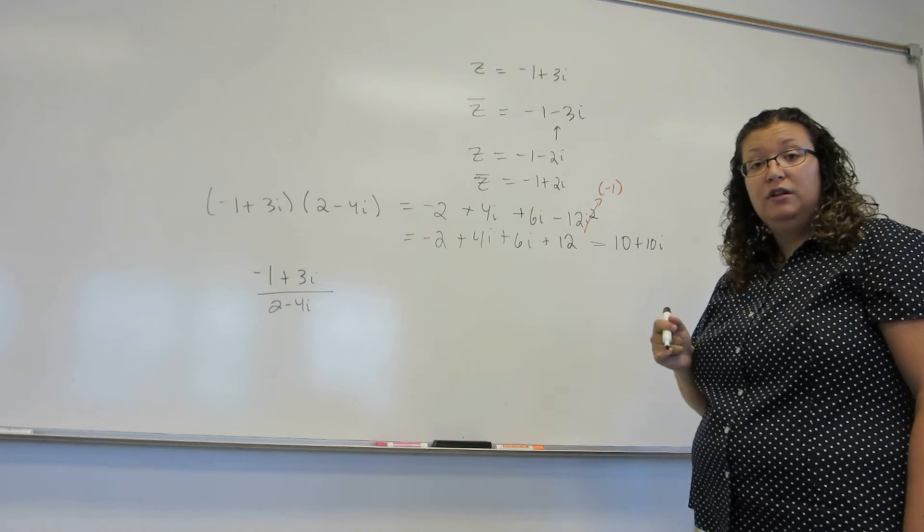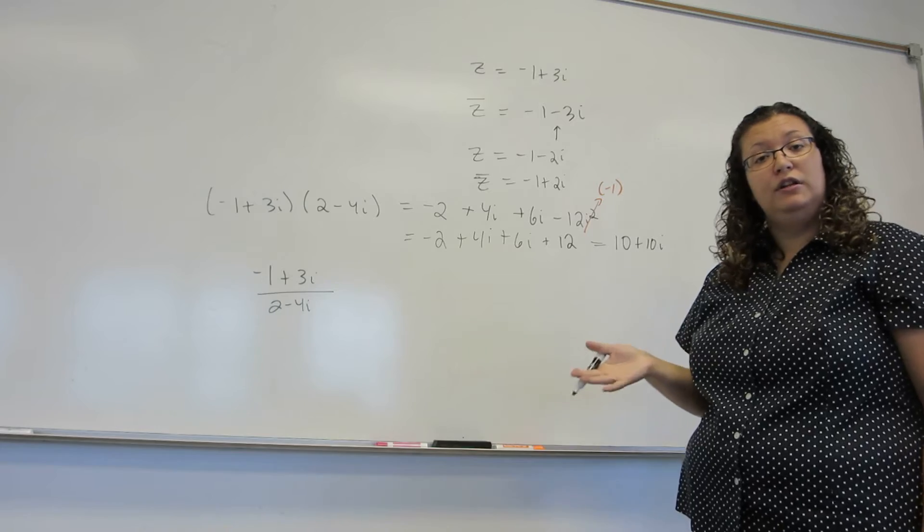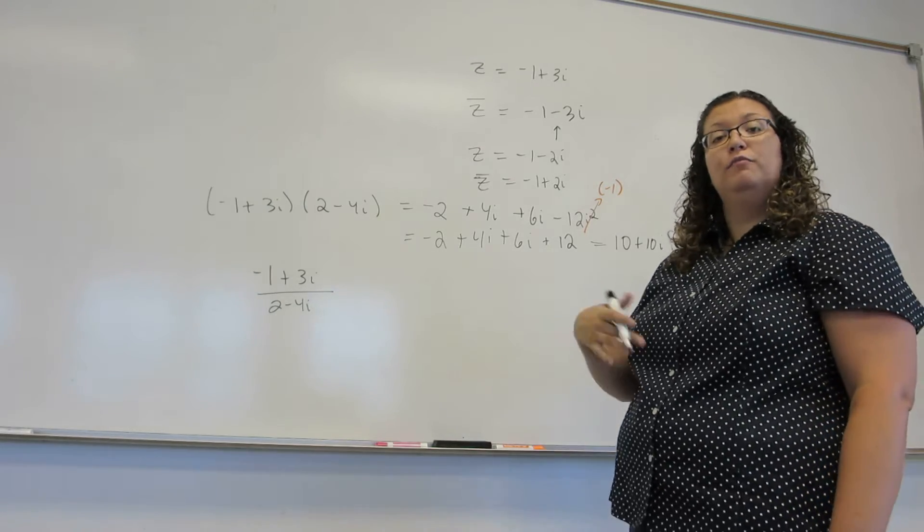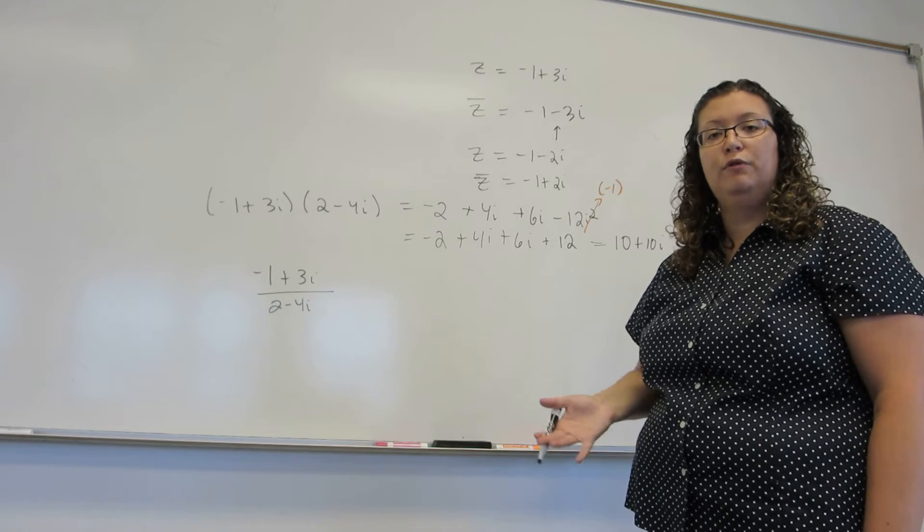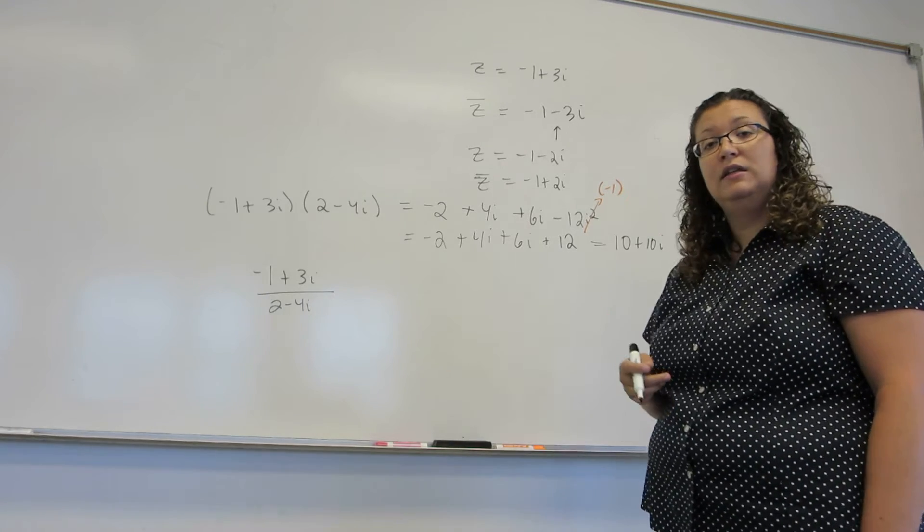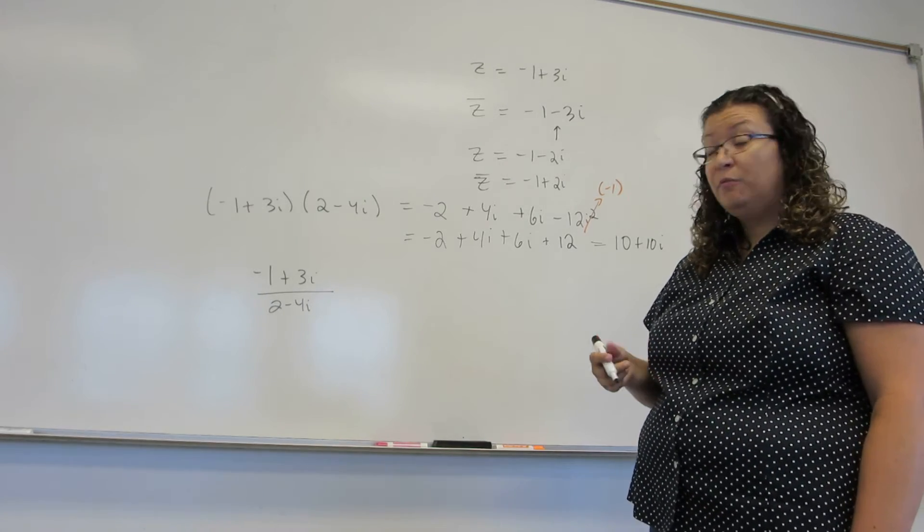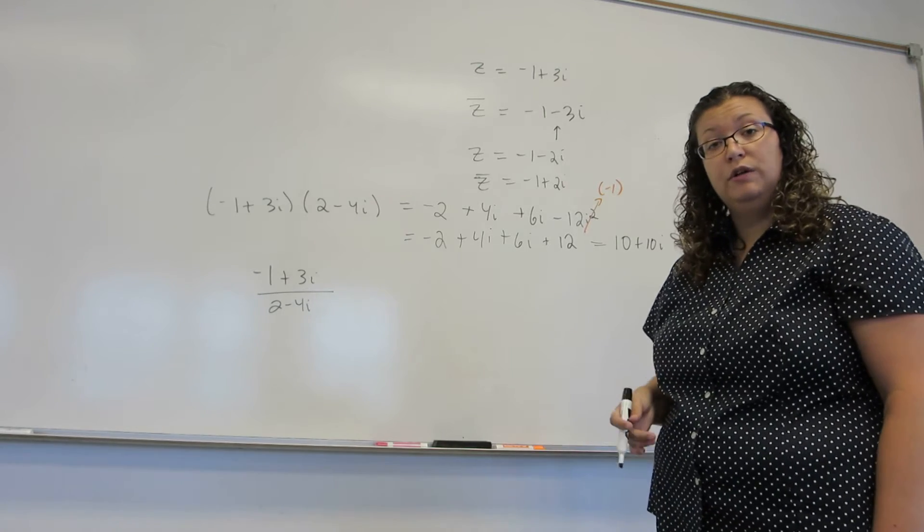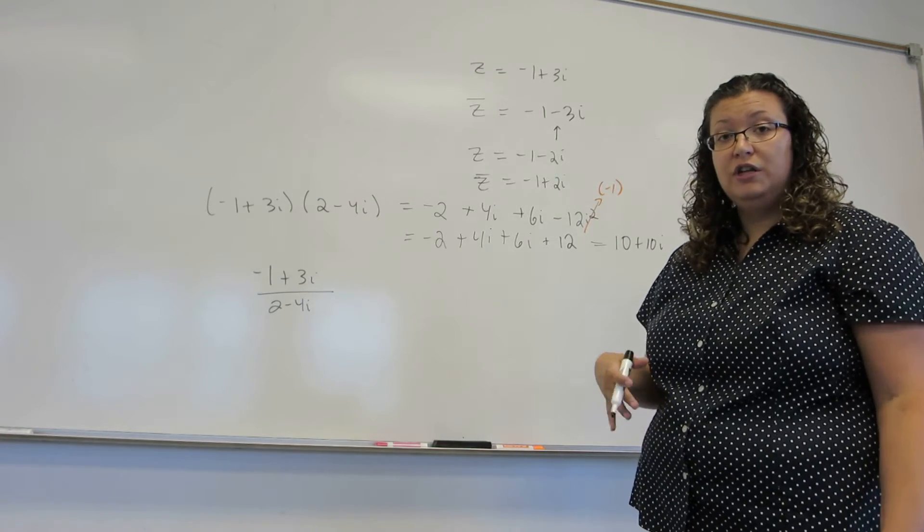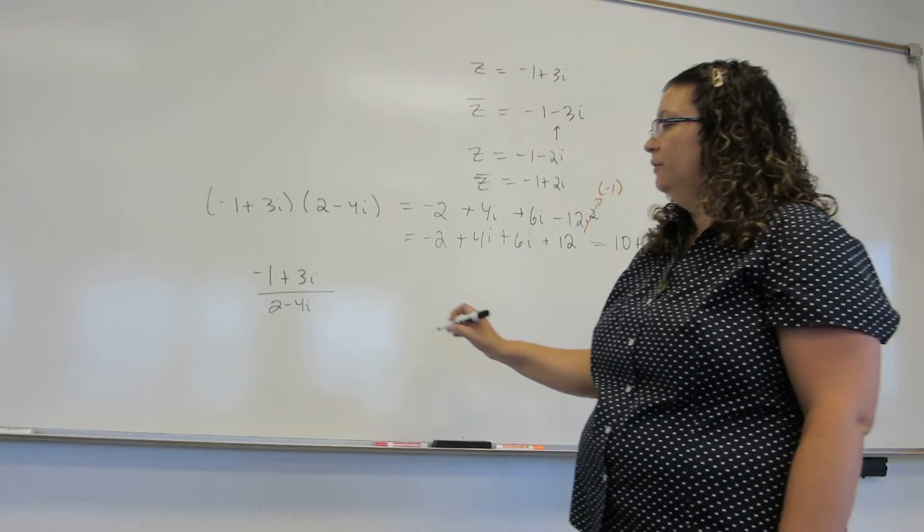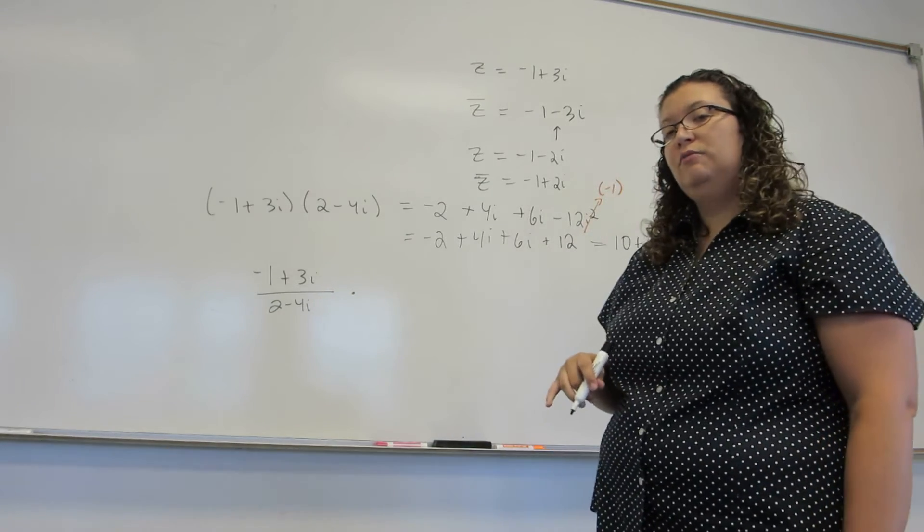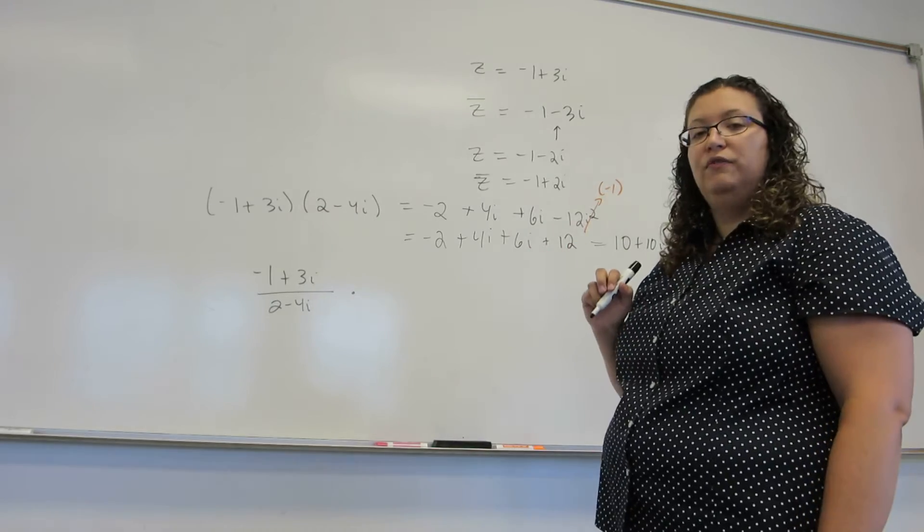Now we've seen something a lot like this before. When we rationalize the denominator we often multiply top and bottom by the conjugate, which was changing the sign on the square root part. It makes sense that it's the same name here. Because if you remember i is really a square root of negative 1. So the conjugate here is the same as the conjugate we use to rationalize a denominator.